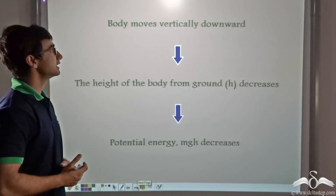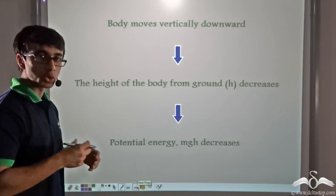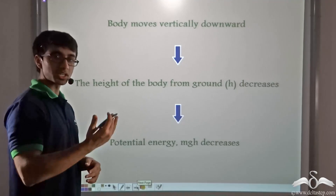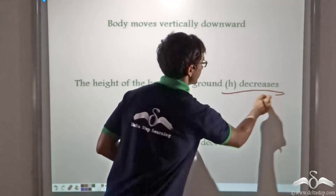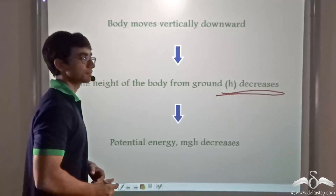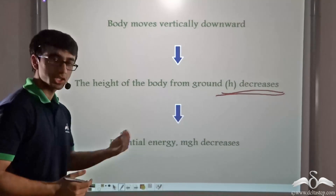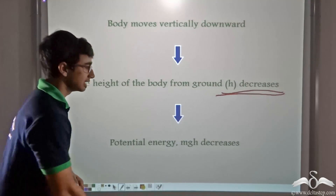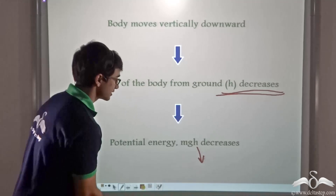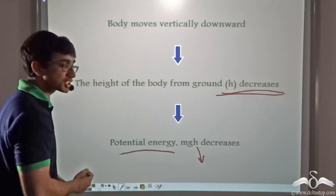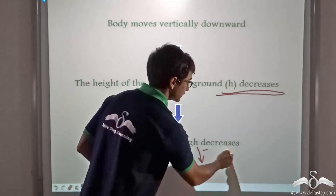Similarly, if a body is moved vertically downwards, its height from the ground h decreases. Keeping m and g constant, if h decreases then the potential energy will also decrease.